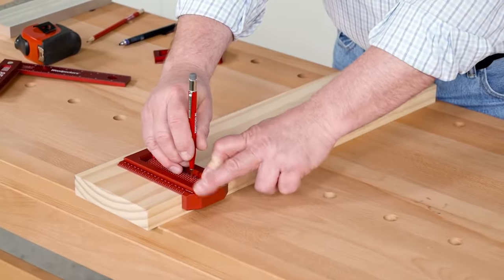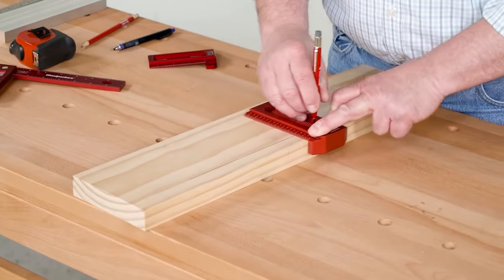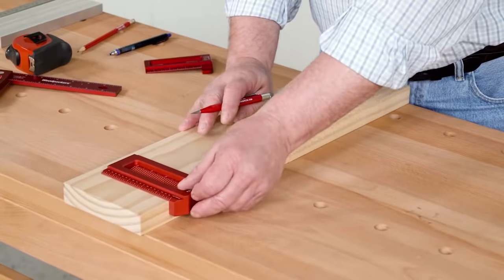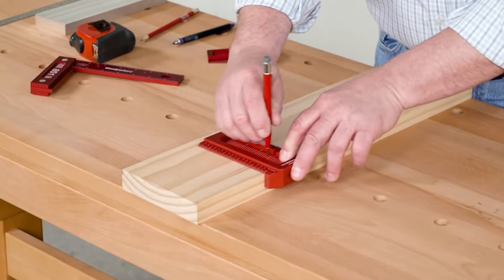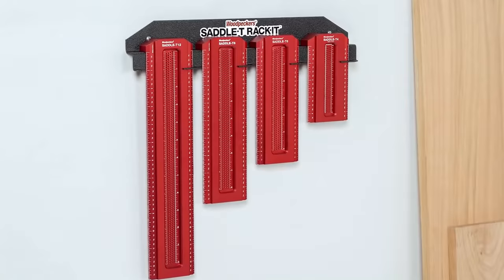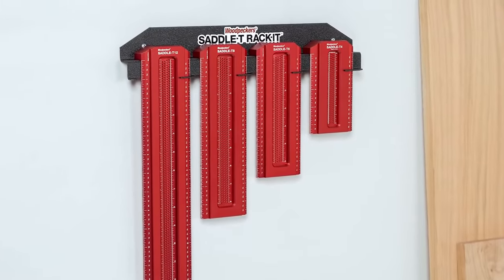You can mark the face as well as the side of the board accurately without having to readjust your square. It comes in different lengths from 4, 6, 8 and 12 inches.